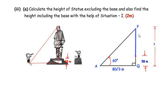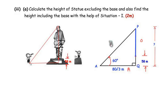Let us find the total height PQ including the base using a trigonometric ratio. Since PQ is opposite to the 60-degree angle, it is the opposite side. AP is the hypotenuse and AQ is the adjacent side. Since we need the opposite side and the adjacent side is given, we do not need the hypotenuse. We will use the tan ratio.